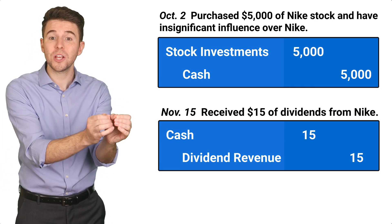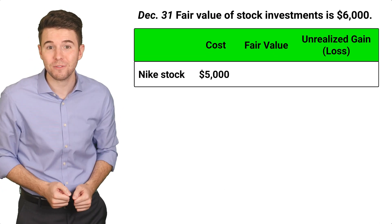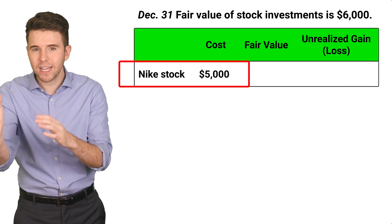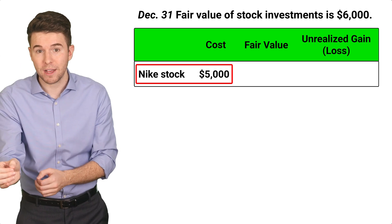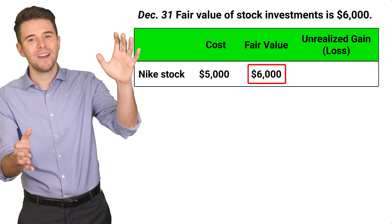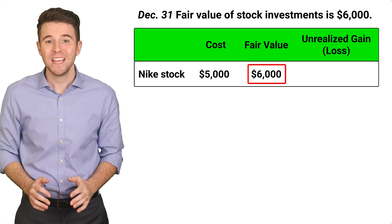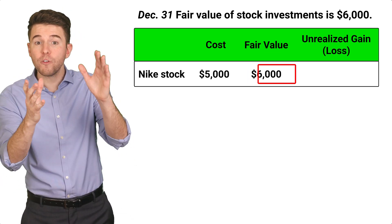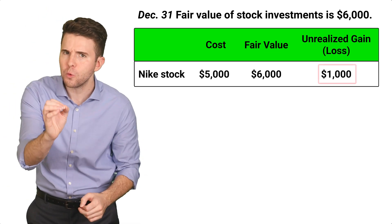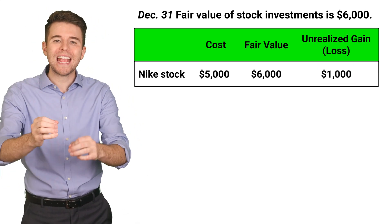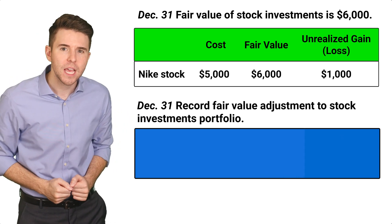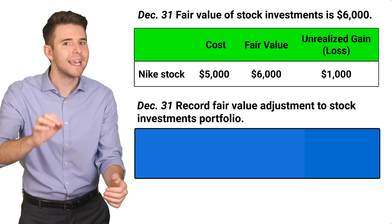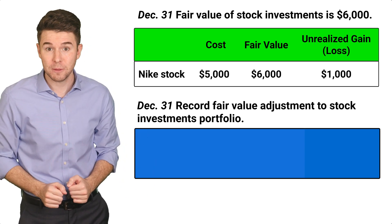Now let's fast forward to our year end, December 31st. Our portfolio of stock investments, which only includes Nike stock with a cost of $5,000, now has a fair value of $6,000, meaning our portfolio has an unrealized gain of $1,000. Because we have an unrealized gain, we need to make a fair value adjustment to our stock investments portfolio, as the unrealized gains or losses get reported on the income statement.